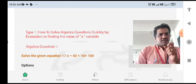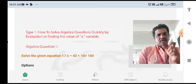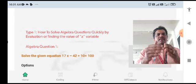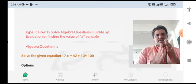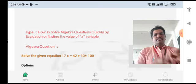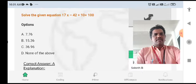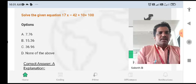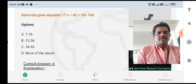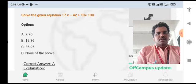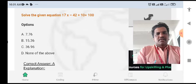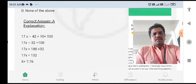They just given a simple equation and based on a particular equation, we just want to solve and find out the particular value. That is simple sums. We will see the question. First question is: solve the equation 17X minus 42 plus 10 equal to 100. That is the first question. We just want to find out the value of X.